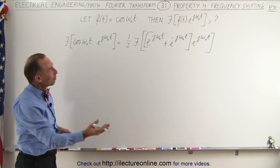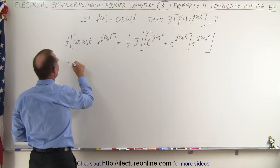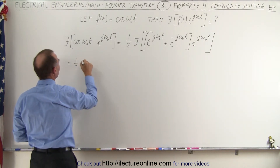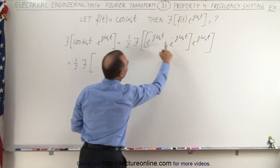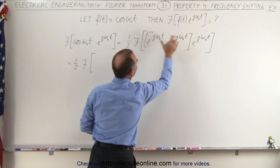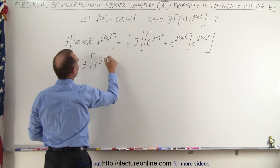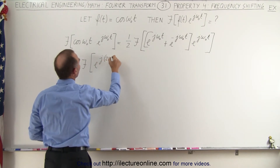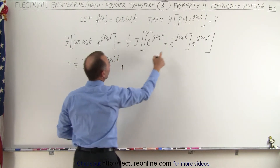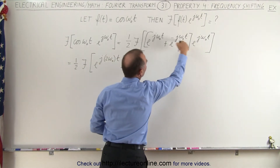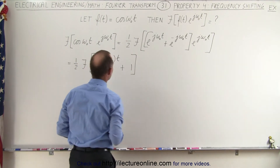The next step is to multiply these together to see what we get. This becomes equal to one-half times the Fourier transform of: when we multiply the two exponentials, we add the exponents, giving us e to the j times two omega sub-naught times t. Then multiplying the remaining terms, the exponents negate — that's e to the zero, or simply one.